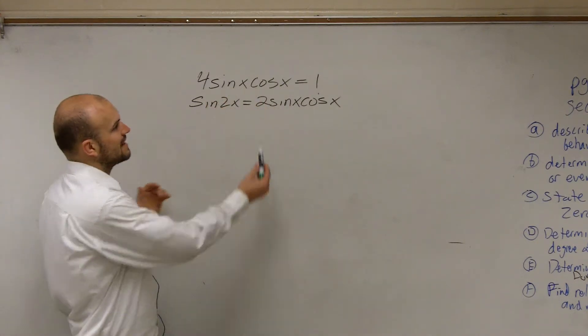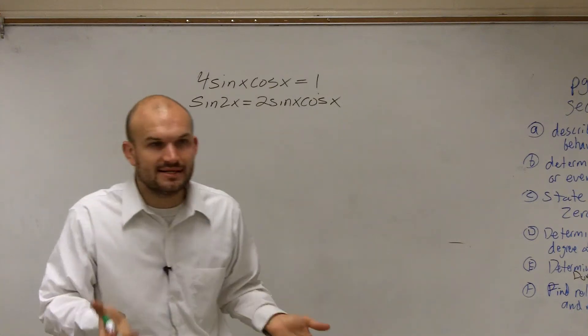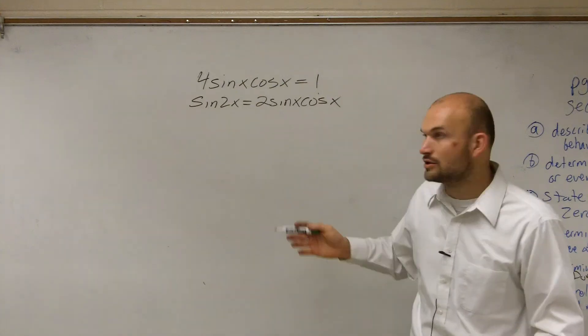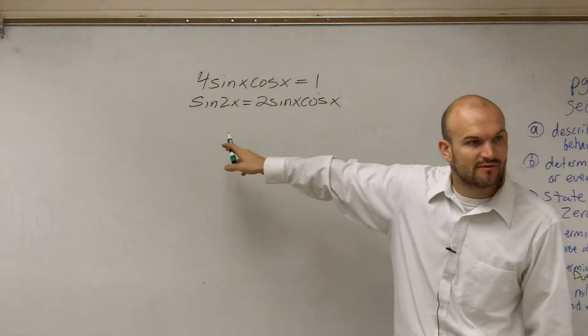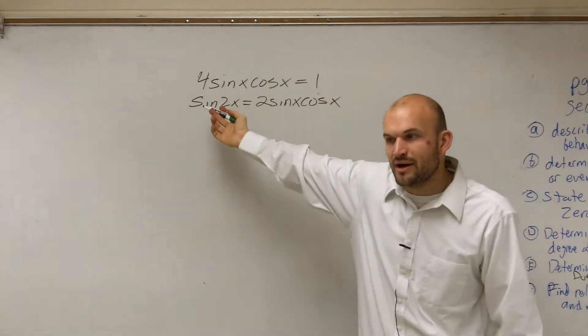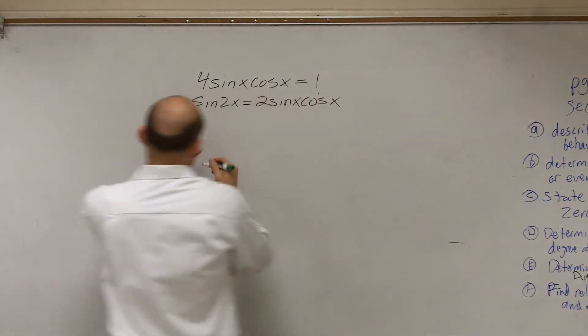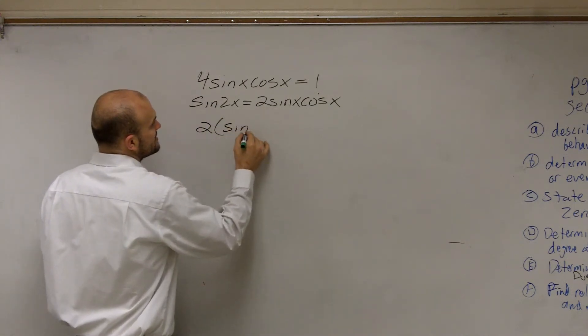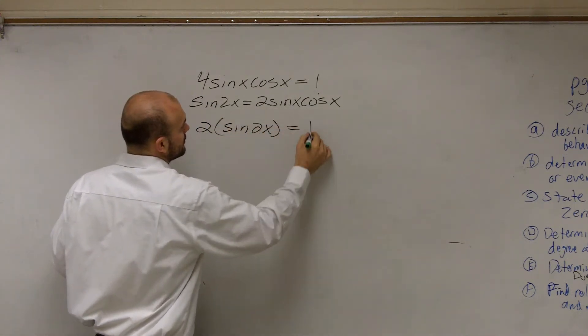So what I notice is I have a sine of x times a cosine of x. So any time I see a sine of x and cosine of x, I might want to think, oh, that's very close to exactly what my formula is. Now, instead of it being multiplied by 2, it's being multiplied by 4. So what I can do, though, is I can rewrite this as 2 times the sine of 2x equals 1.